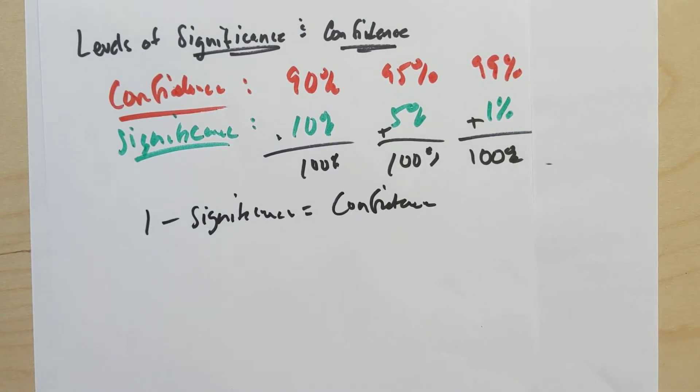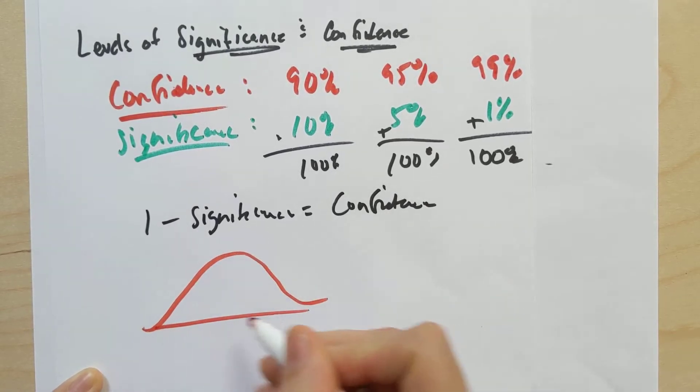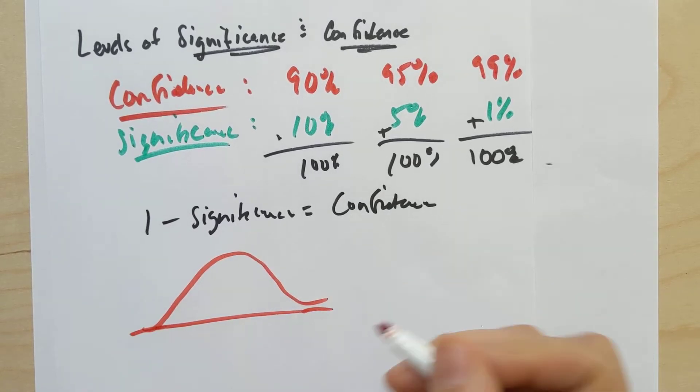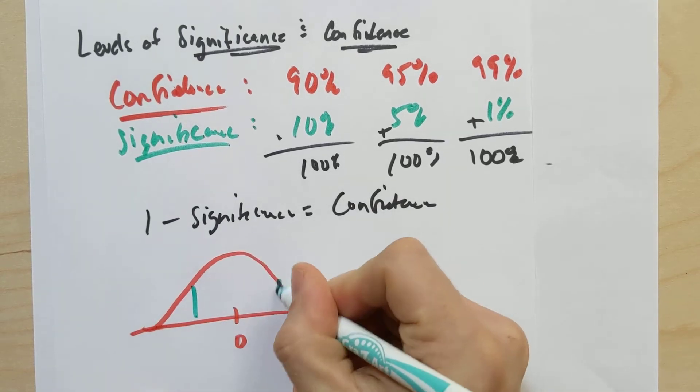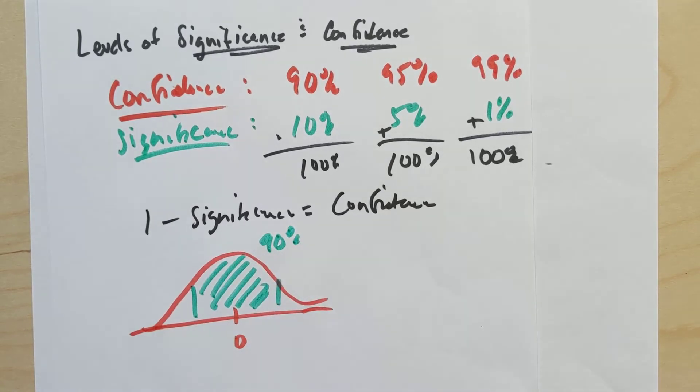they were based on some normal curves. Or we actually saw some T distributions and things like that as well, too, already. But let's just think about things in terms of a rough unimodal symmetric distribution. And when you wanted to say 90% confidence,